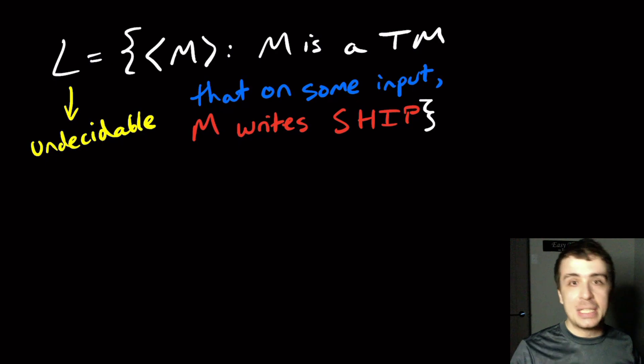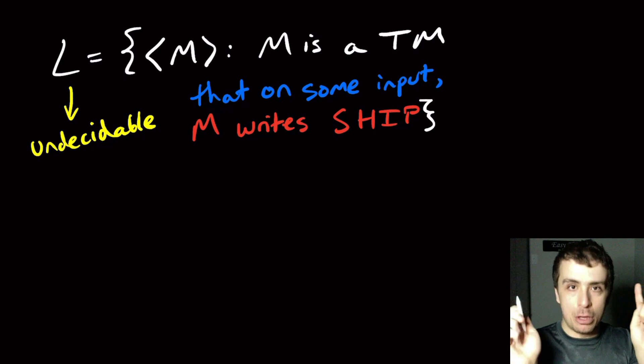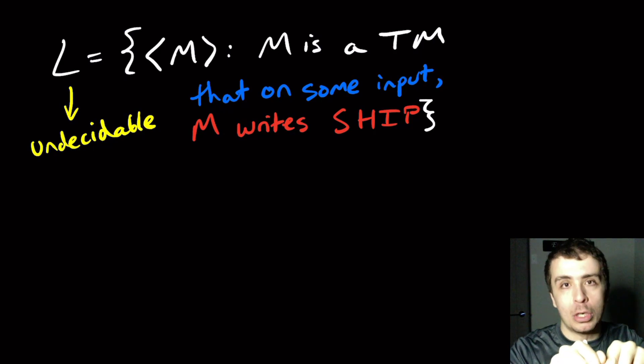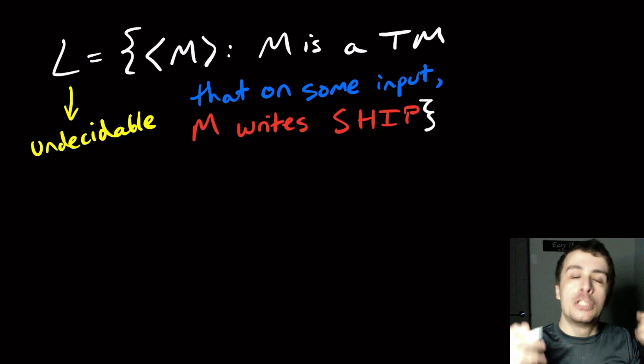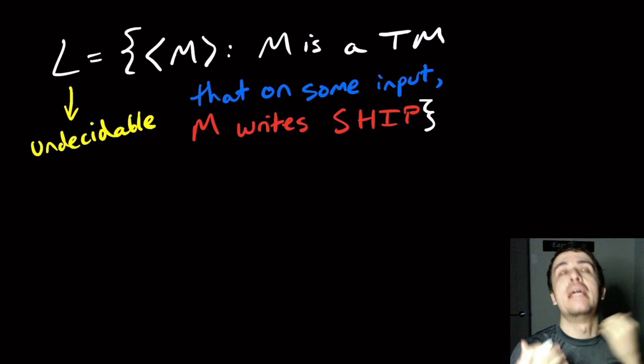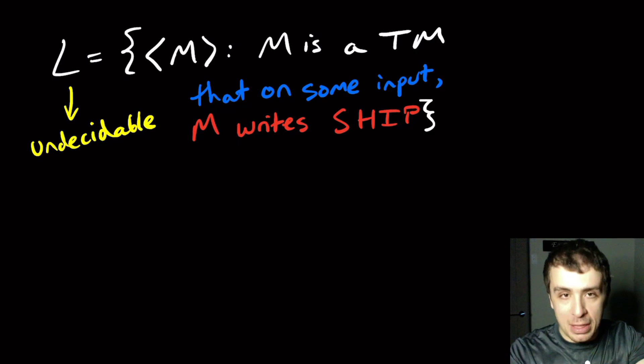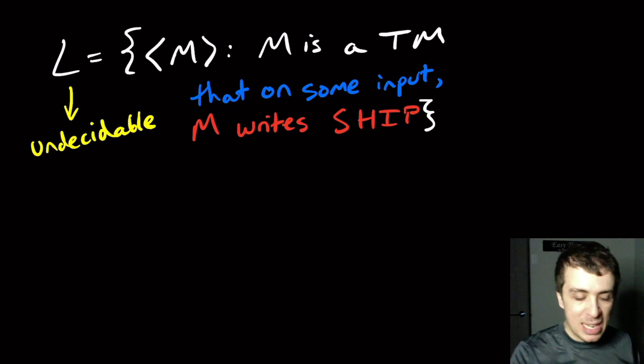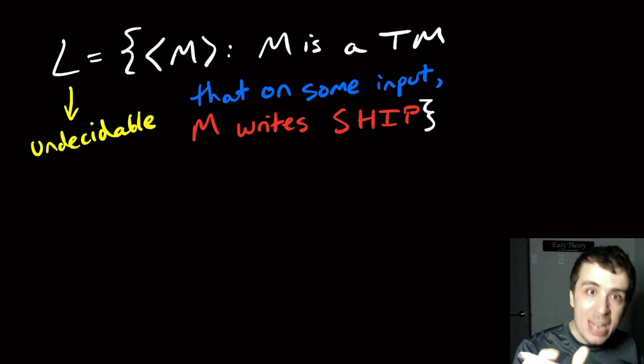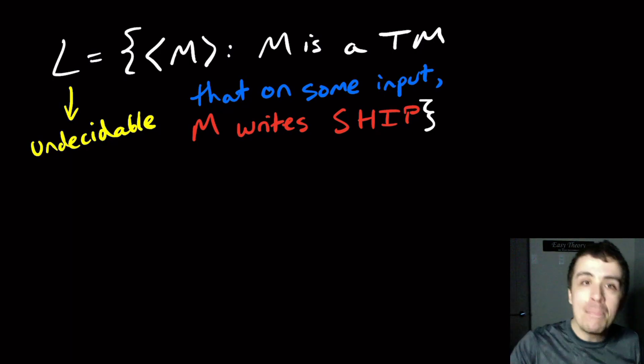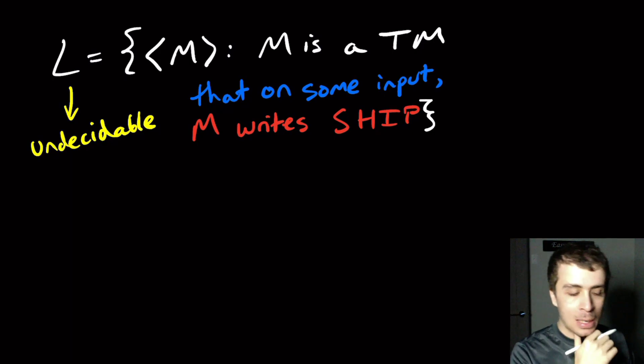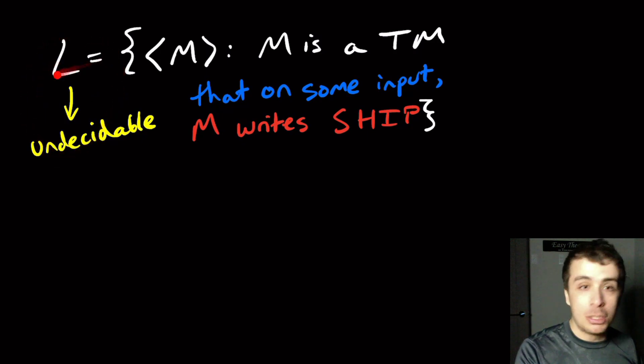The reason is that if you have two machines with different languages, it might be that those two machines still write the word ship on some string. Rice's theorem requires that the two machines have the same language. But even if you have different languages, they still could write the word ship. It's not whether we accept the input ship here. It is that we have it written at some point. So the input string might be totally different.